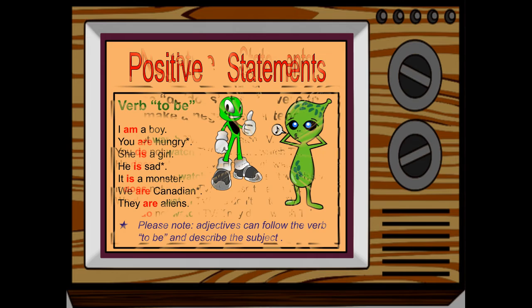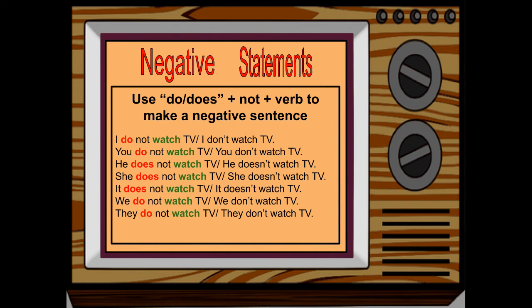Okay, let's look at negative statements. Use do or does plus not plus a verb to make a negative sentence. You can also use contractions: don't or doesn't. Examples: I do not watch TV; you do not watch TV; he does not watch TV; she does not watch TV; it does not watch TV; we do not watch TV; they do not watch TV.